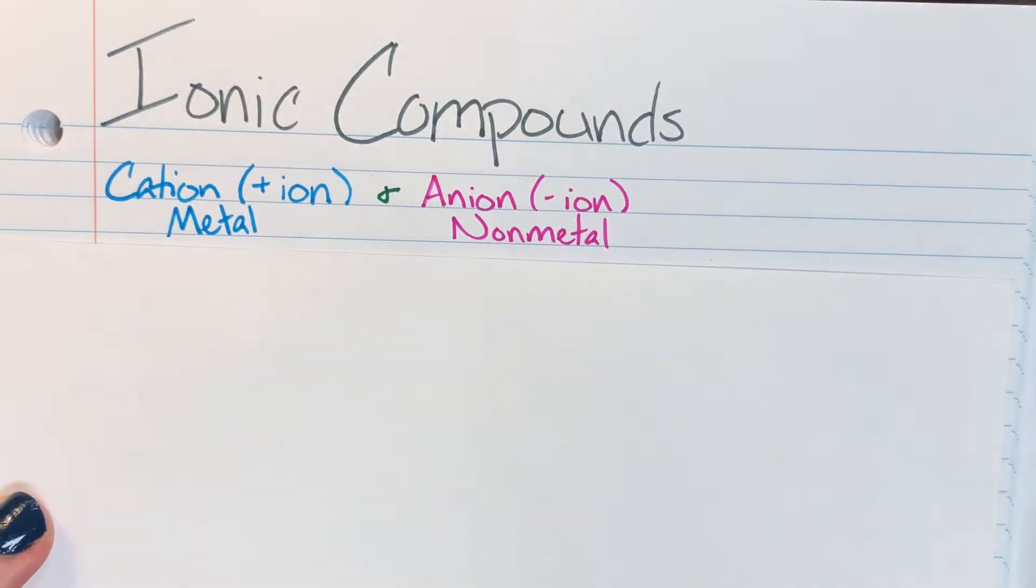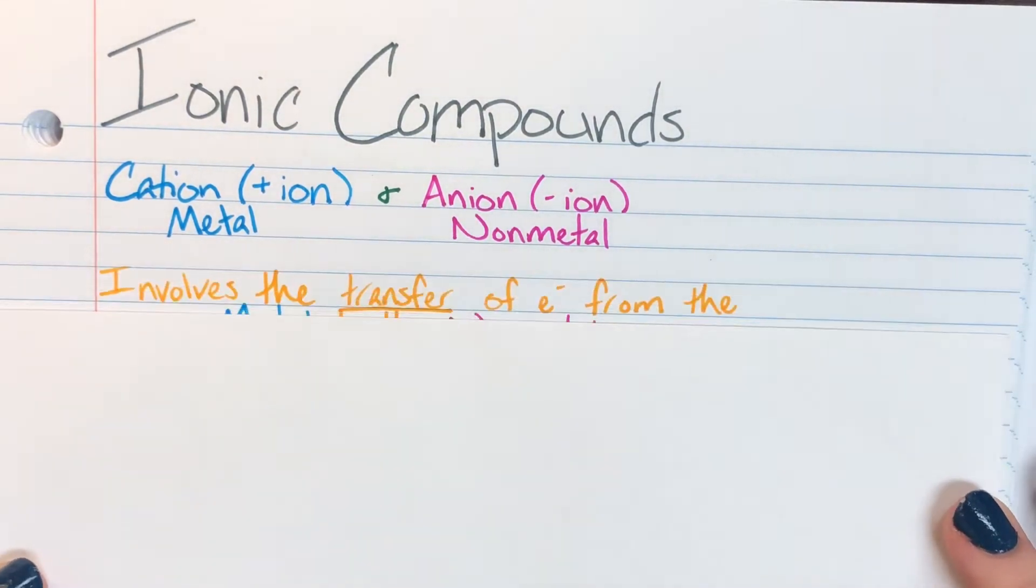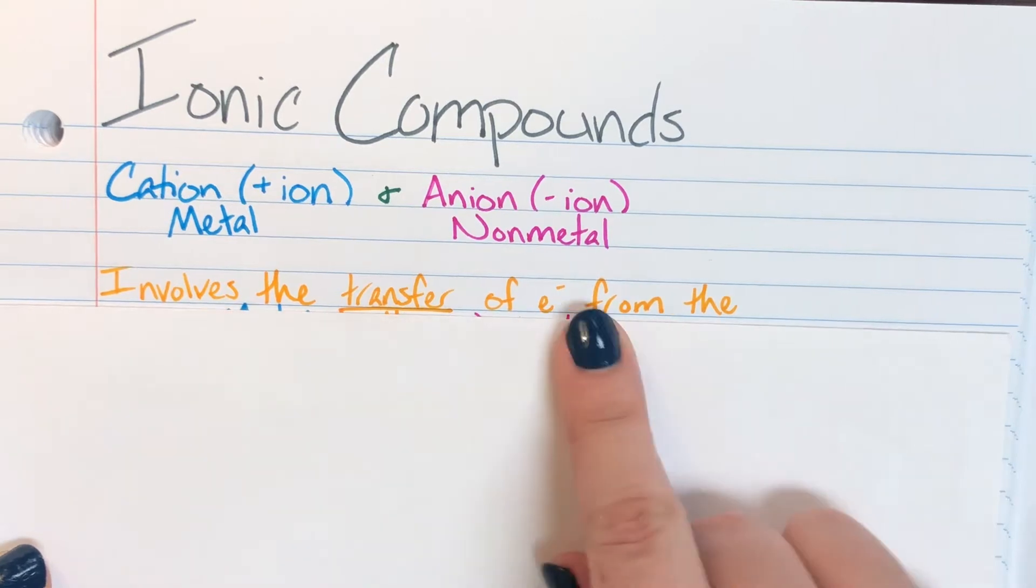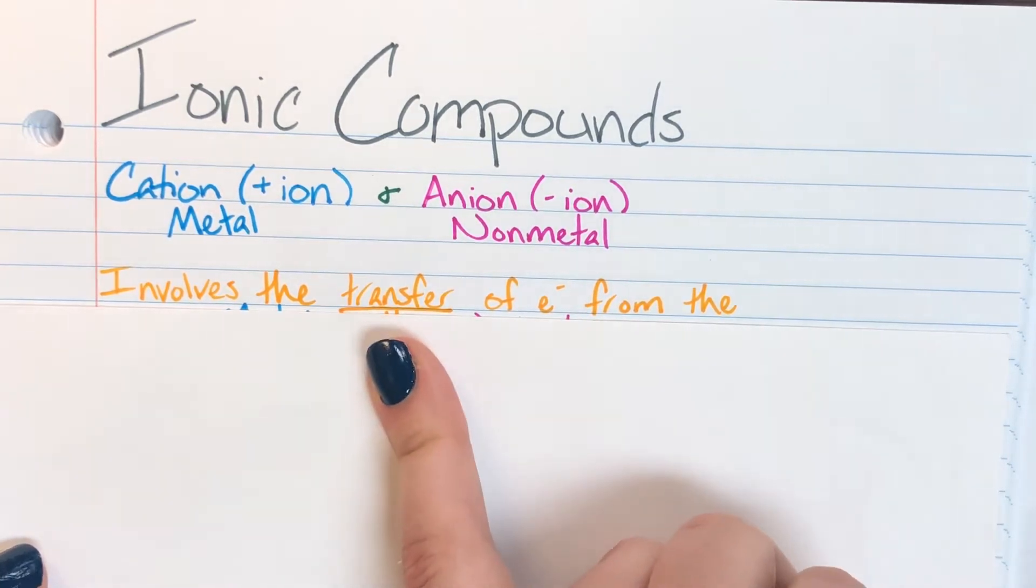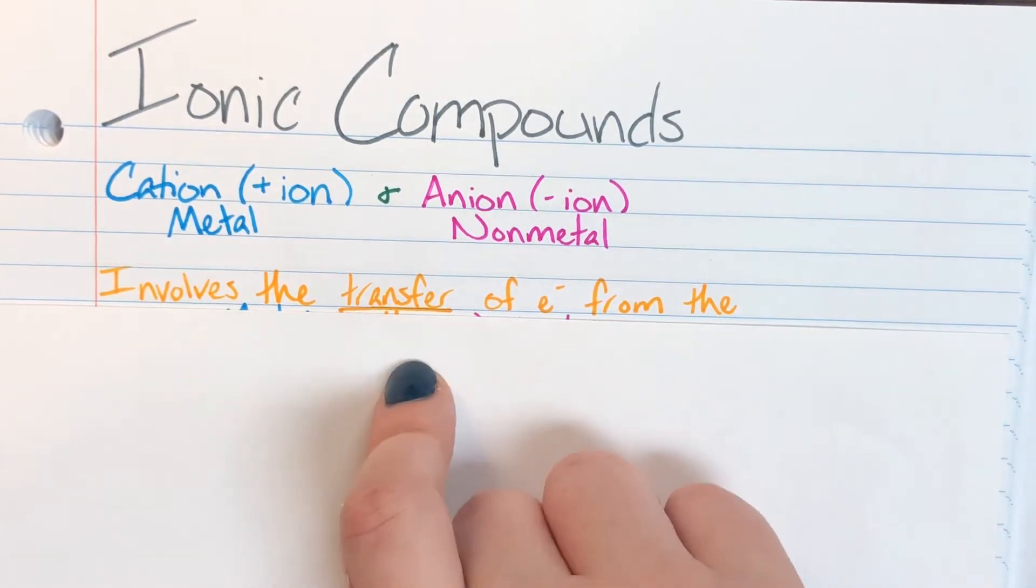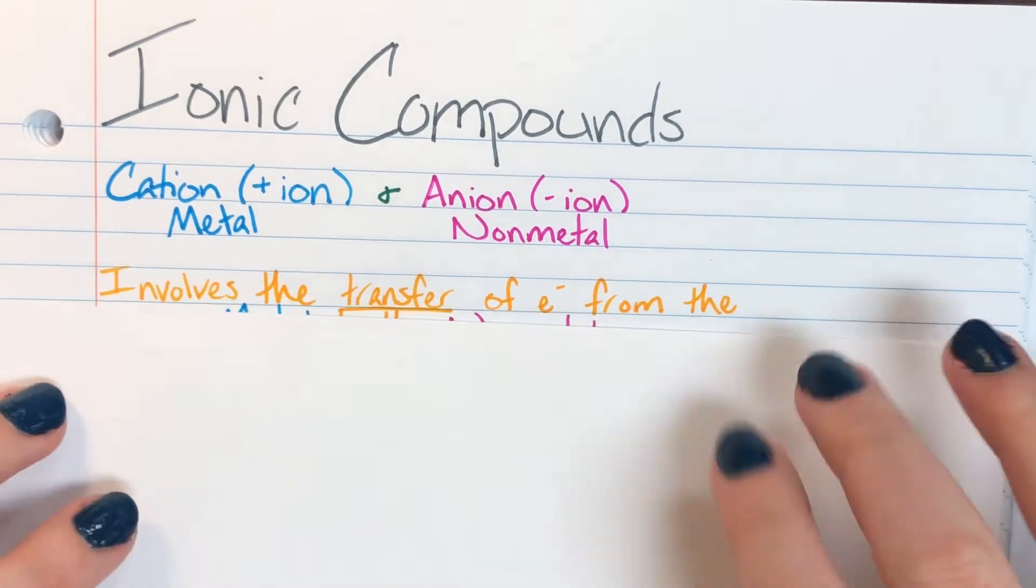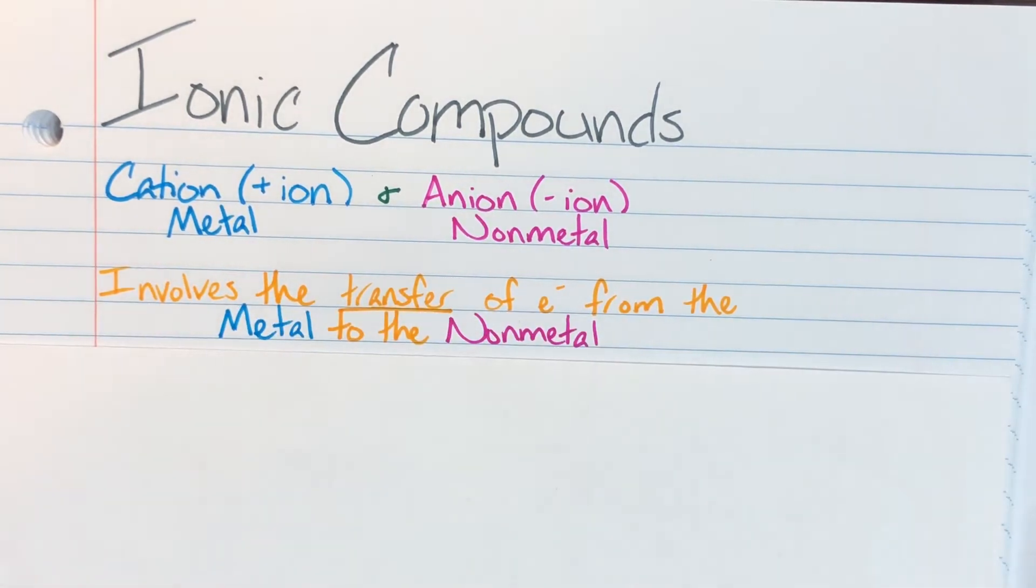So my ionic compounds literally have ions in them and this is because they are made of ions and ions have an imbalance of electrons to protons. So they happen because of a transfer of electrons from my metal to my non-metal.